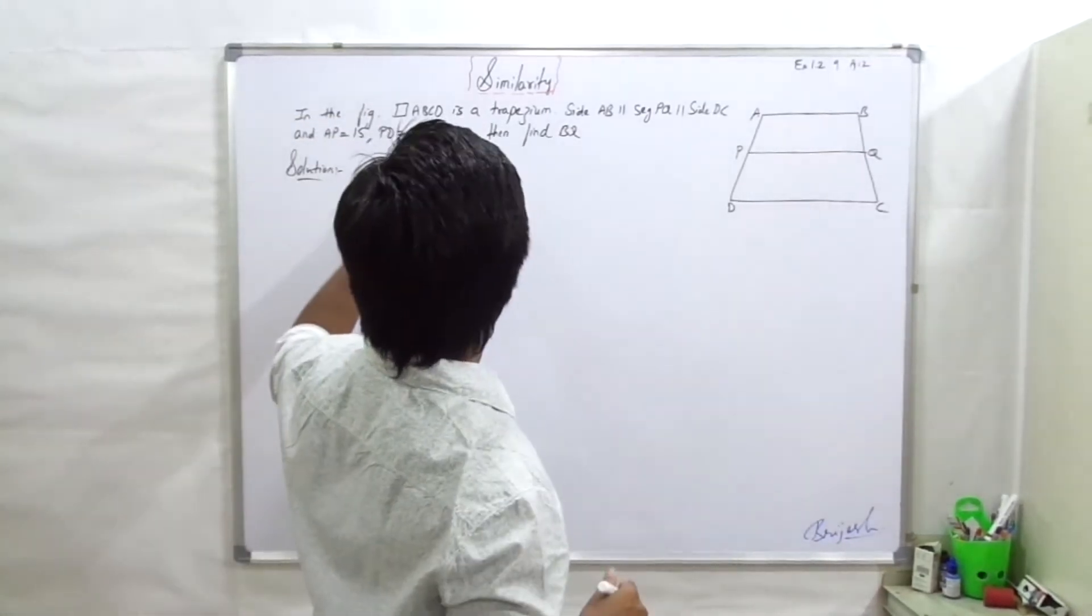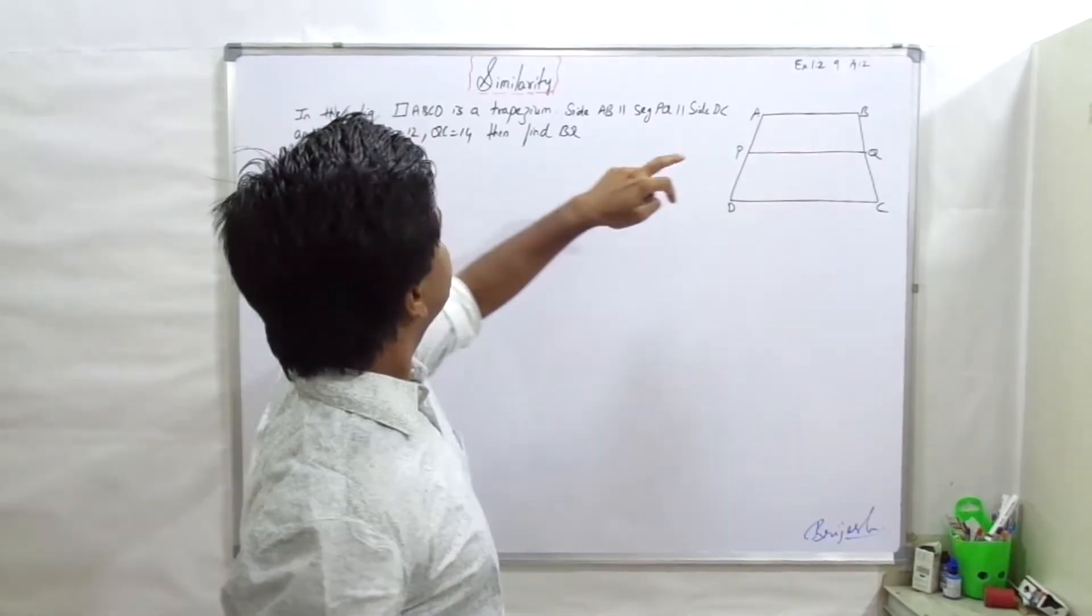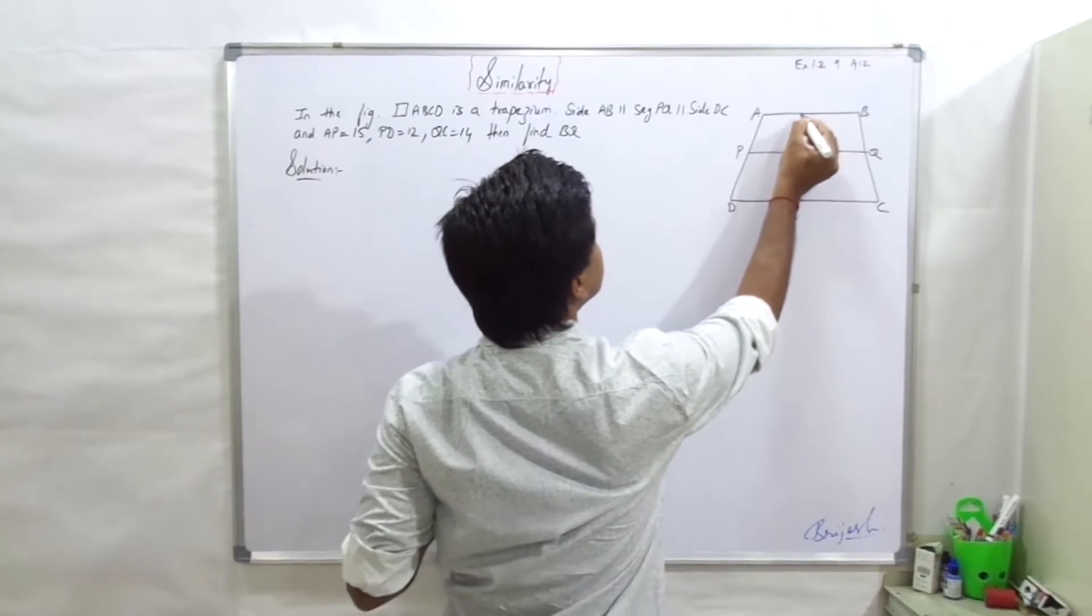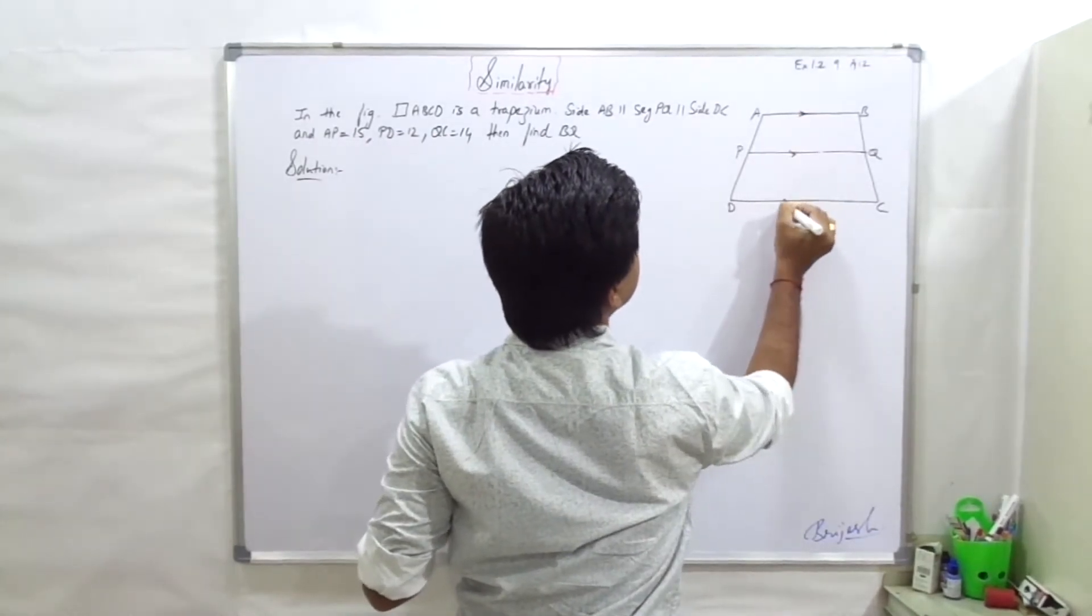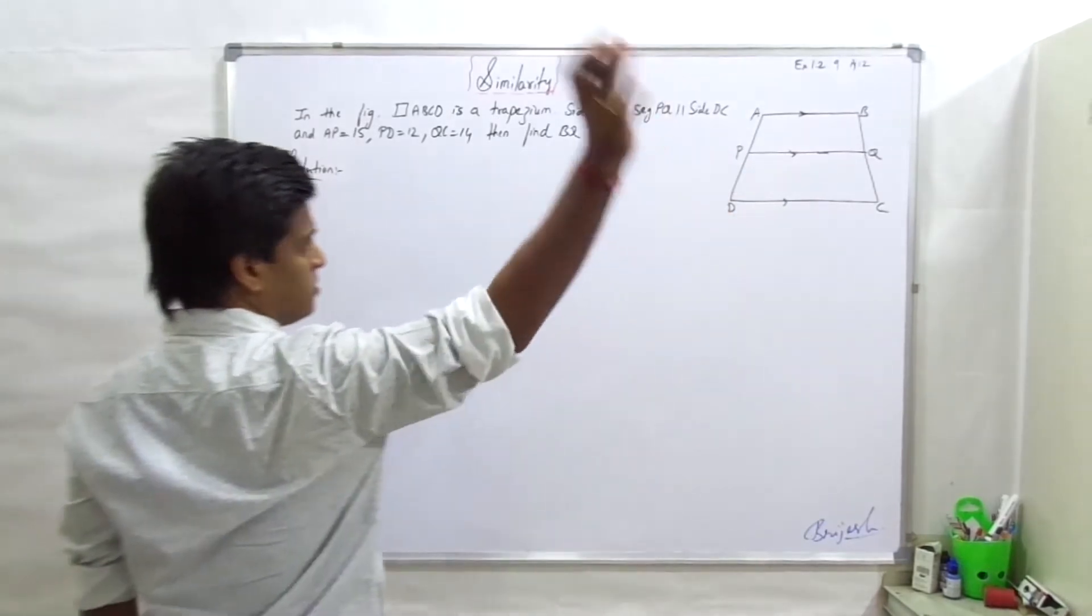So here it has been given that ABCD is a trapezium, and this is parallel, and this is parallel. And this is parallel here, the values are, let us see, the parallel here.